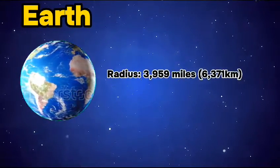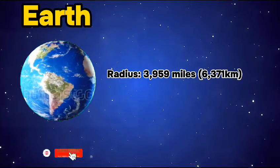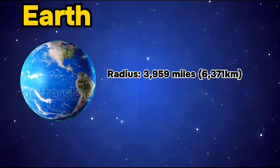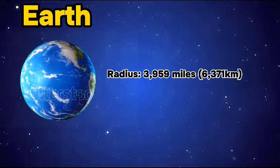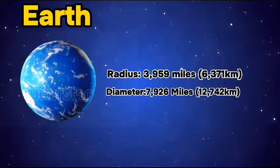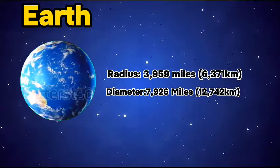The radius of Earth is around 3959 miles or 6371 kilometers. And its diameter is about 12,742 kilometers.